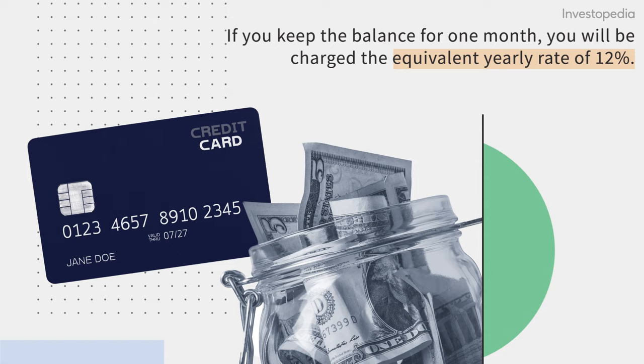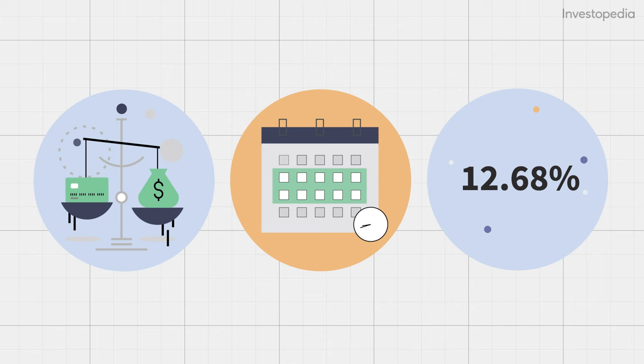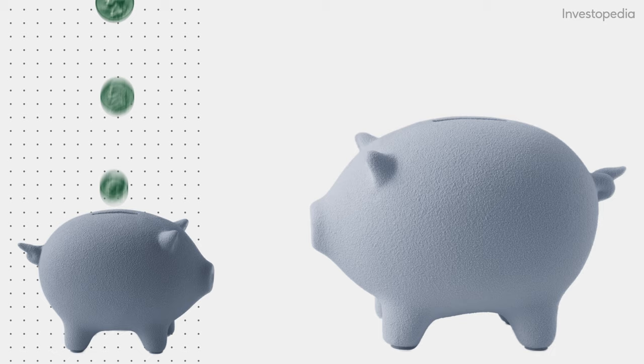This means if you keep the balance for one month, you will be charged the equivalent yearly rate of 12%. But if the balance remains for the year, the rate becomes 12.68% as a result of compounding each month.